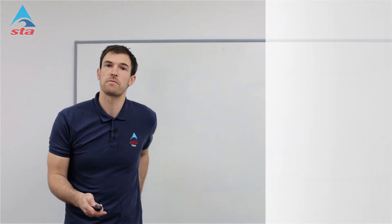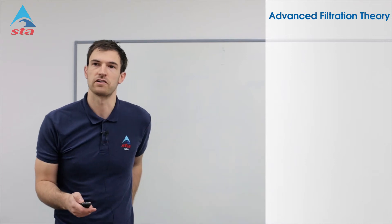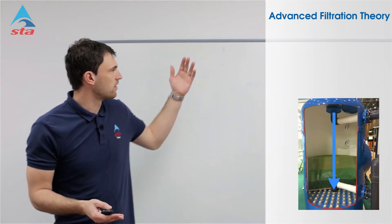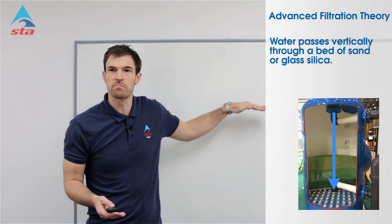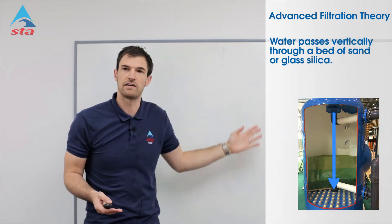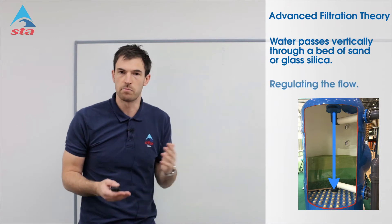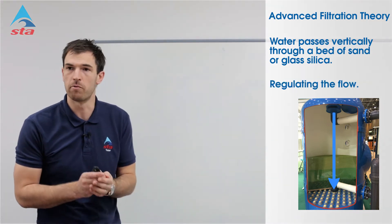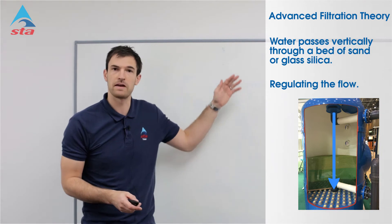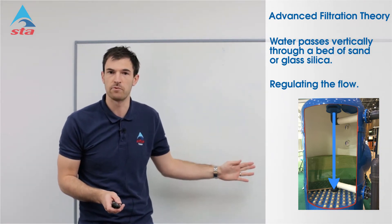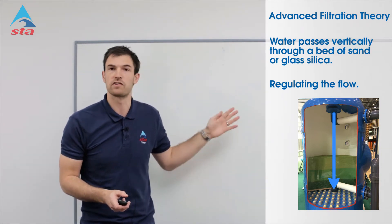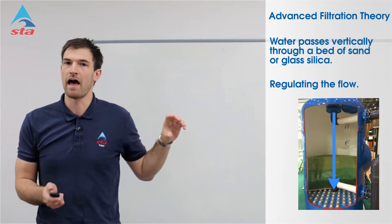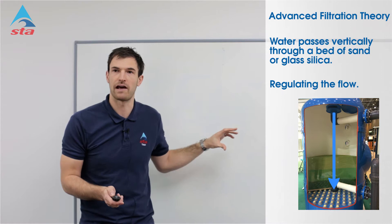The first thing we need to look through is the basic principles of filtration. With your filtration system you've got your sand bed, a minimum of 800mm, and your water passing vertically down through that sand bed. It's important to remember that regulating the flow is one of the most important elements. The slower the speed through that sand vertically downwards, the better and more efficient the filtration is going to be. We're going to take an in-depth look at that speed and how we calculate it.